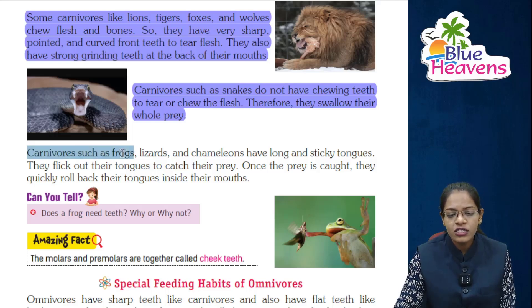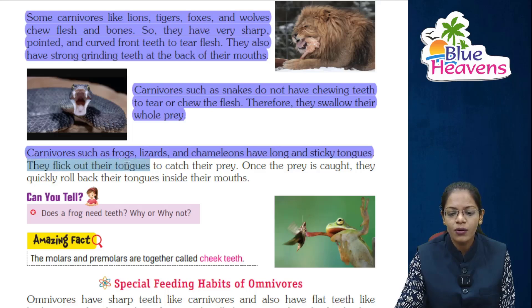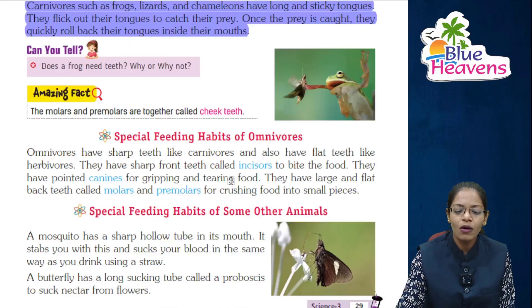Carnivores such as frogs, lizards, and chameleons have long and sticky tongues. They flick out their tongues to catch prey. Once the prey is caught, they quickly roll back their tongues inside their mouth.